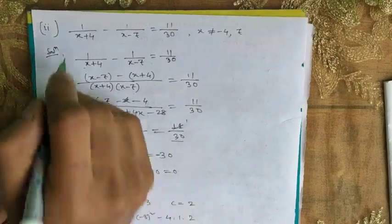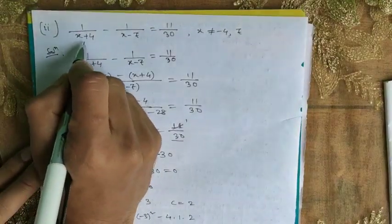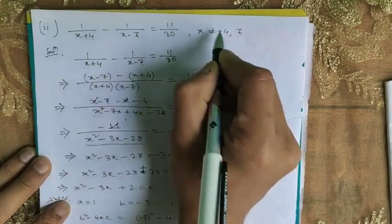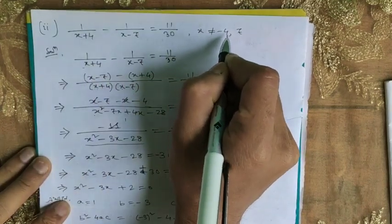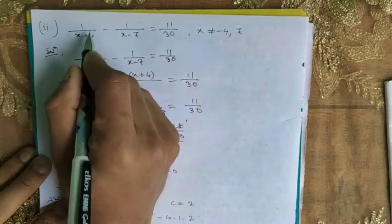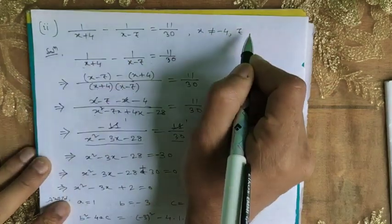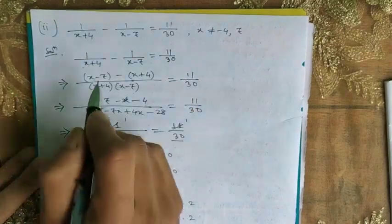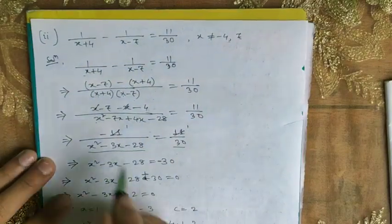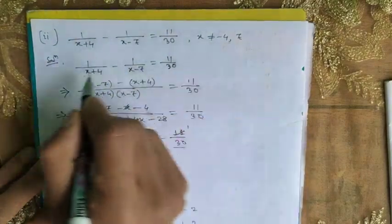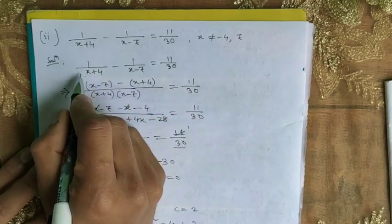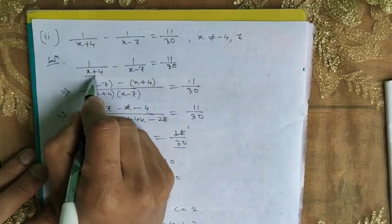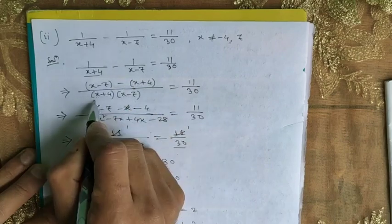We have to solve: 1 by (x plus 4) minus 1 by (x minus 7) is equal to 11 by 30, where x is not equal to minus 4 or 7. If x equals minus 4 then the denominator is 0, and if x equals 7 then that denominator is 0. So let's multiply both sides by (x plus 4) into (x minus 7).